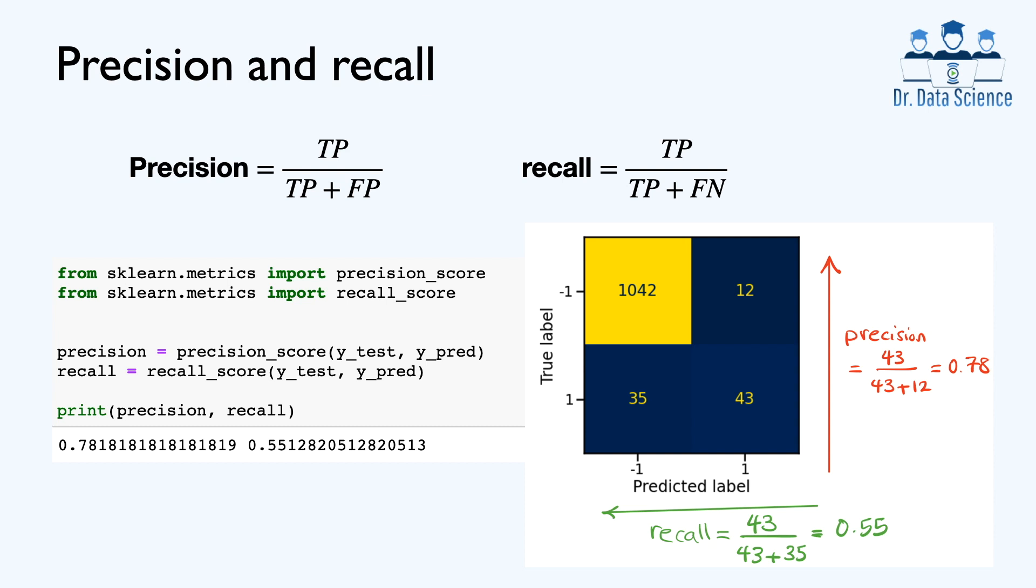The main lesson here is that when we have imbalanced data sets, we should pay a lot of attention to using proper evaluation metrics. Beside the standard accuracy measure that we use, there are two other important metrics known as precision and recall. Precision is defined as the ratio of true positive over true positive plus false positive.